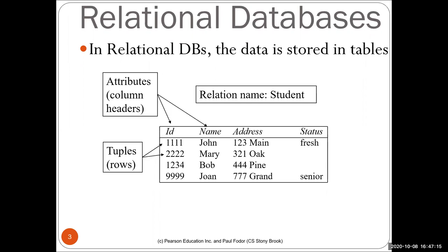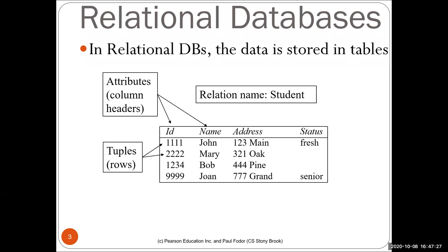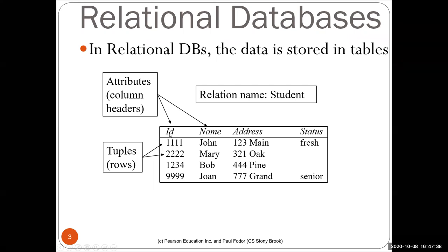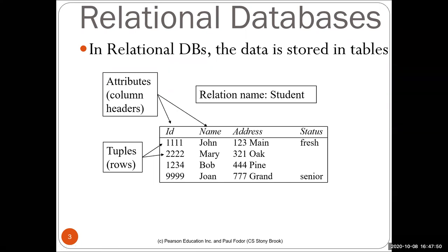Relational databases rely on tables. In most results for a query or a database table, you see tables that have tuples or rows, and the first row is the row of attributes or column headers. For instance, the relation schema for this specific table contains attributes ID, name, address, and status, and then you have four different tuples — a quite straightforward and intuitive way to see data represented as tables.